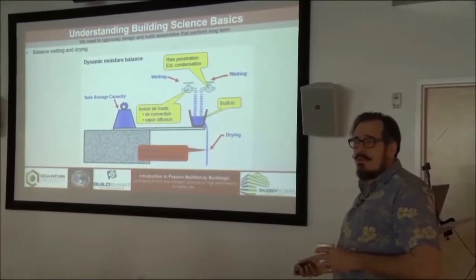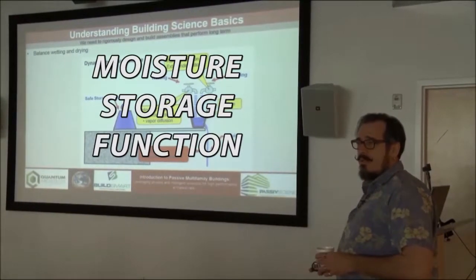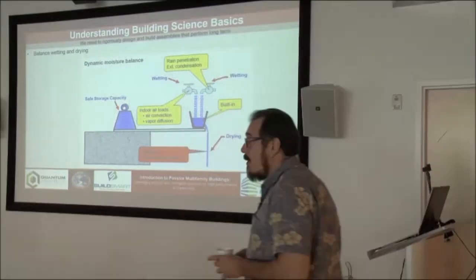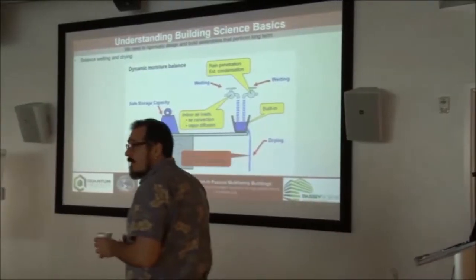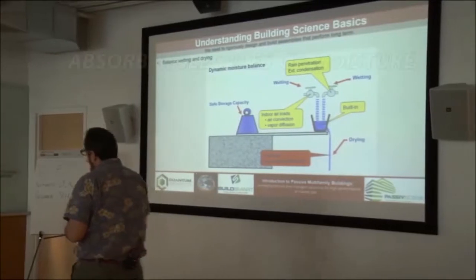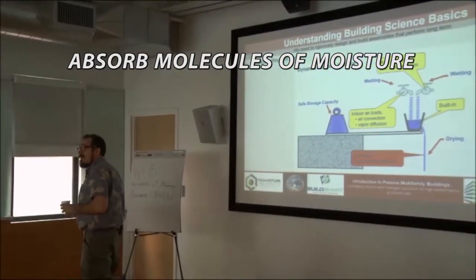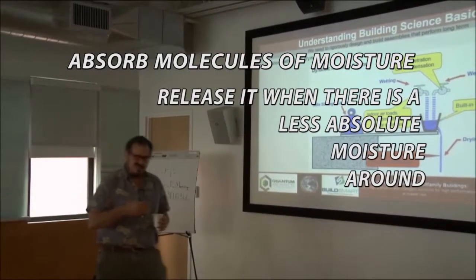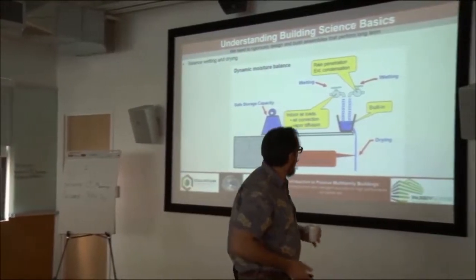Almost all materials have some moisture storage function. There are a few materials like glass or aluminum that really won't, but most materials have a moisture storage function, which means they can absorb molecules of moisture and then release it when there's less absolute moisture around them. Everything wants to be in equilibrium.